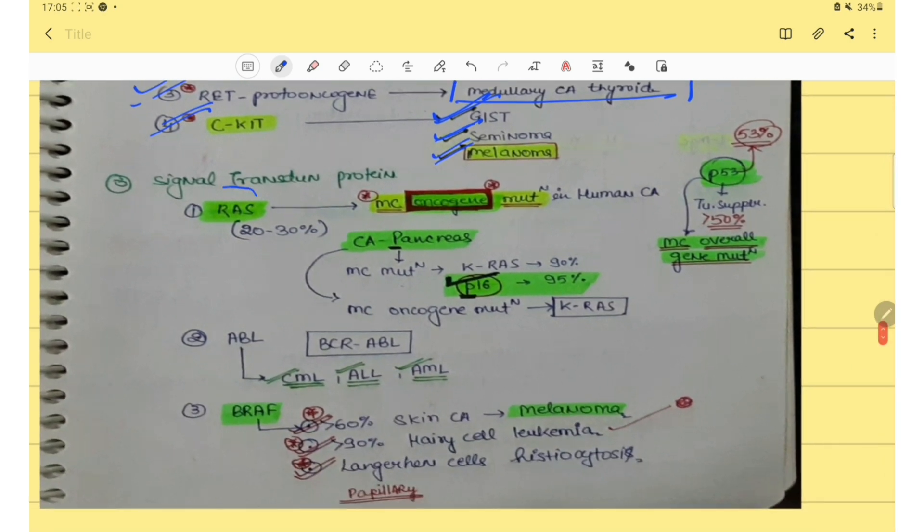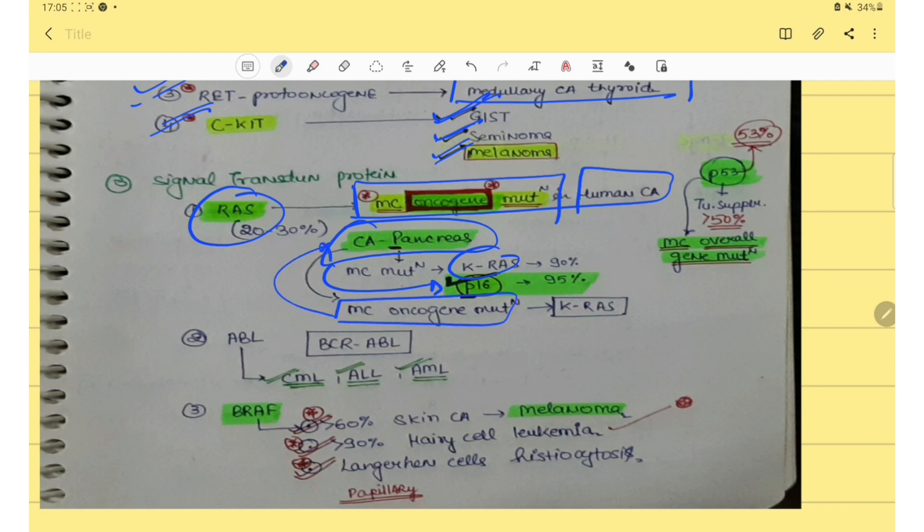Then RAS. RAS is the most common oncogene mutation in human carcinoma. But in CA pancreas, the most common mutation is P16, not the KRAS. But the question is about the most common oncogene mutation in CA pancreas, so it is KRAS. But most common overall is P16 mutation.